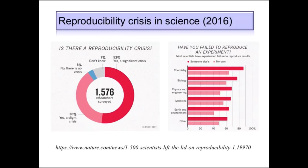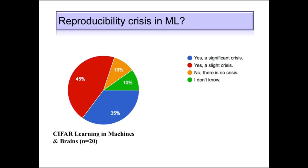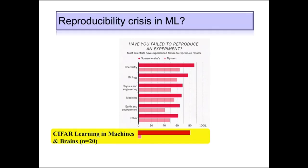I had the opportunity last weekend to be at a workshop sponsored by CIFAR, and I had about 20 colleagues in a room. I asked them anonymously: how many of you think there may be a reproducibility crisis in machine learning? Out of these 20 participants, 45% indicated they thought there was a slight crisis, 35% thought there was a significant crisis, and about 10% each thought there was no crisis or weren't quite sure. I then asked whether they had failed to reproduce an experiment — about 80% reported failing to reproduce someone else's, while only about 5% reported failing to reproduce one of their own.